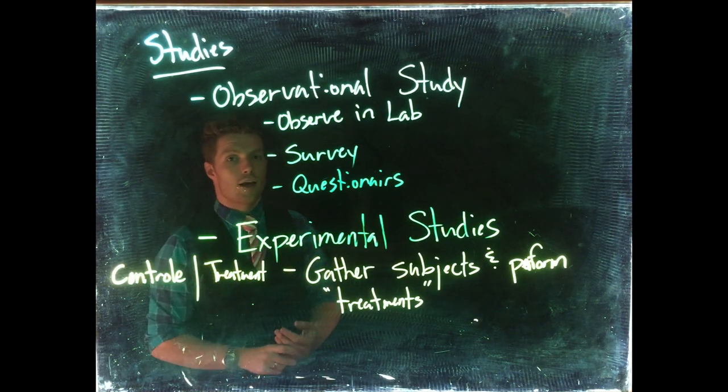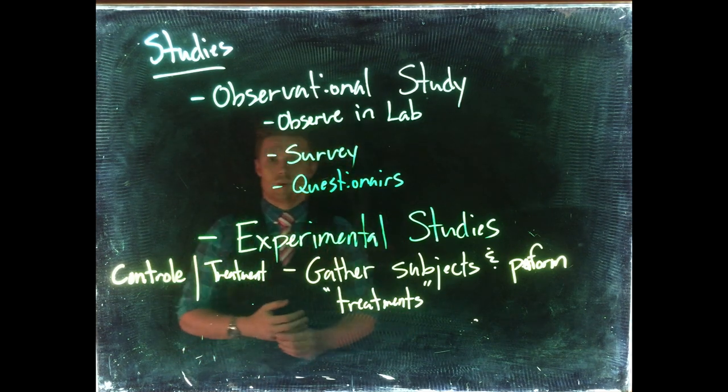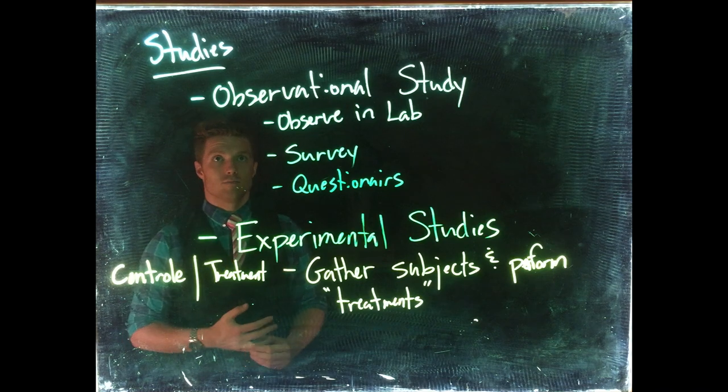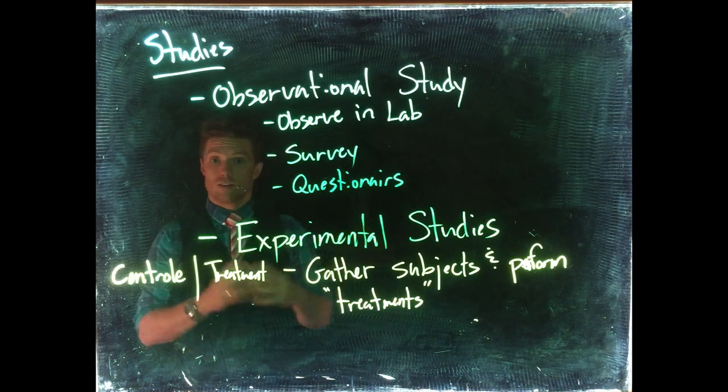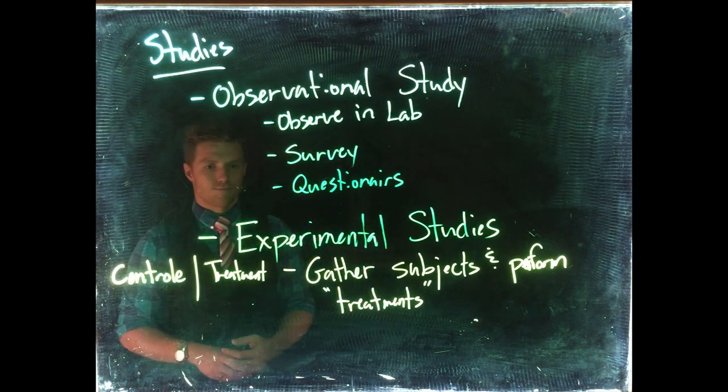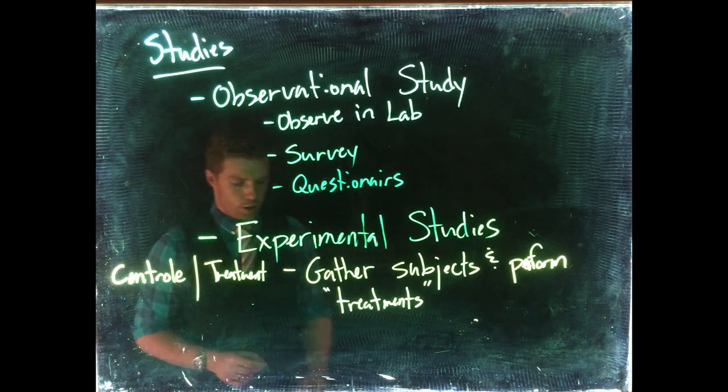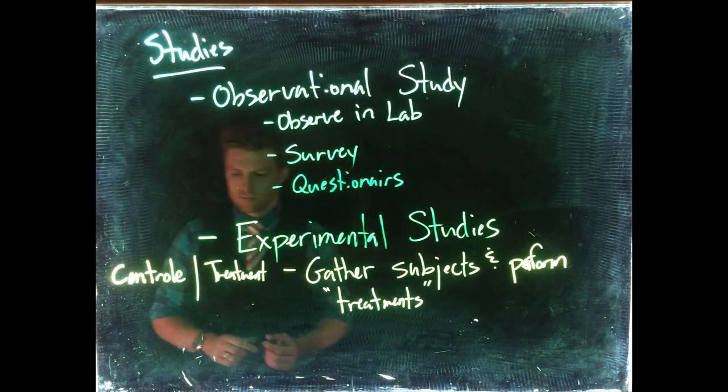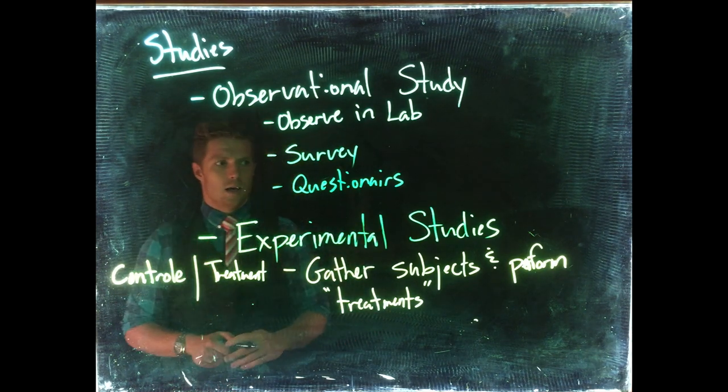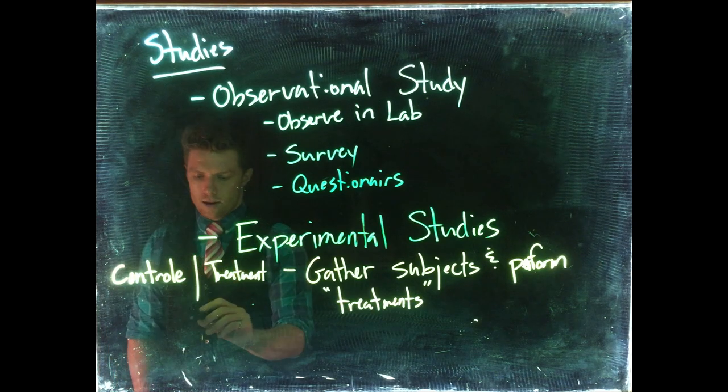With observational studies, we can only find correlation. Because we don't know all the other factors about these people, we haven't divided them into groups, and we haven't given them a specific treatment. Experimental studies are really important for science, and there are some variations of them.